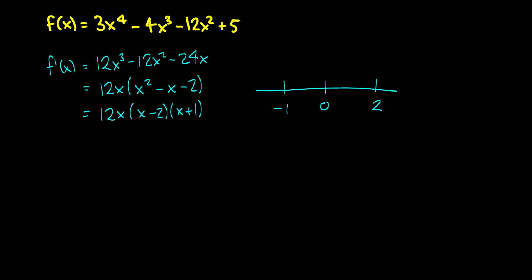We take a point in each of the intervals to find out if the derivative is positive or negative. Picking x = -2 gives a negative times a negative times a negative, which is negative. Picking x = -0.5 gives a negative times a negative times a positive, which is positive.